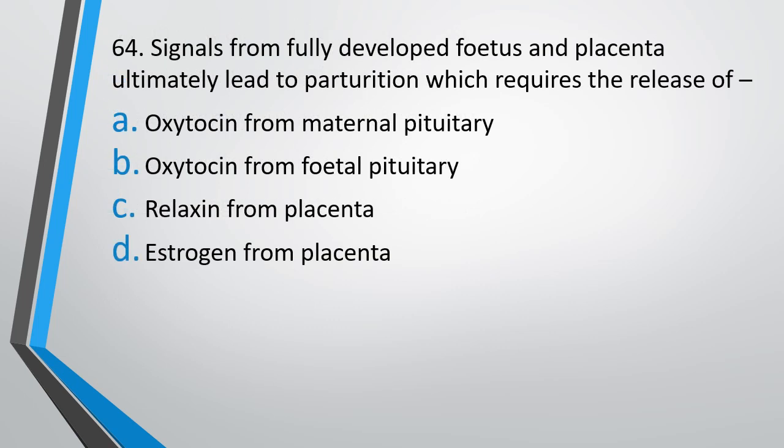Question number 64. Signals from fully developed fetus and placenta ultimately lead to parturition which requires release of oxytocin from maternal pituitary, oxytocin from fetal pituitary, relaxin from placenta, or estrogen from placenta. The correct answer is option A, oxytocin from maternal pituitary.